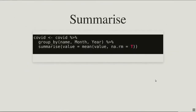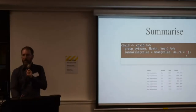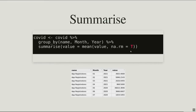The next step is the actual summarize. We group by the variable name, and month and year, then call summarize() — updating the value column to be the mean, with na.rm to ignore empty values. This drops all other fields not in the group_by, leaving us with just the variable name, the month, the year, and the mean.